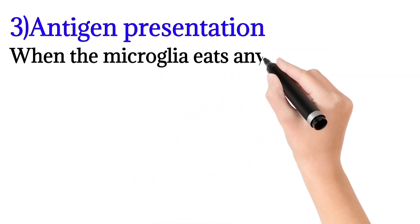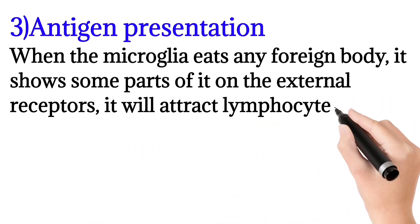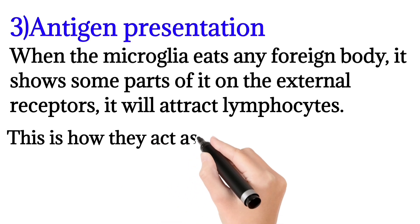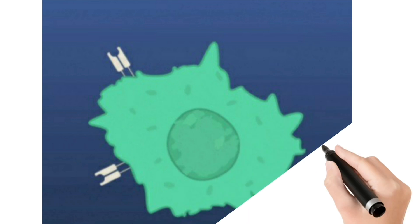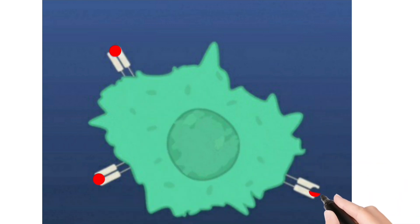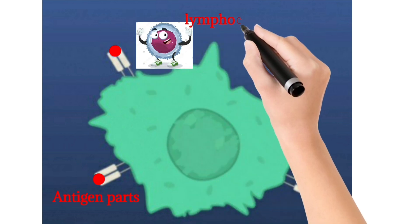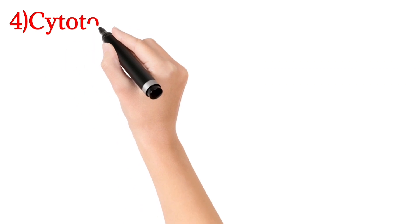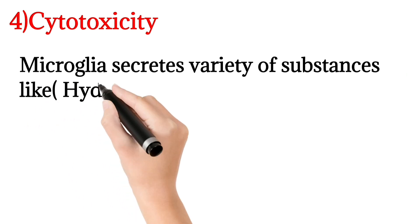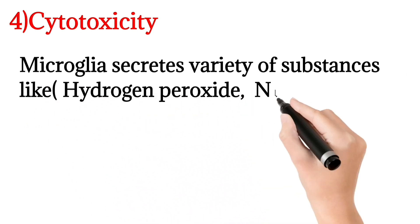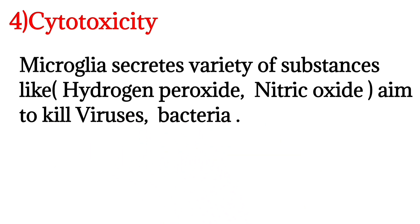The next function is antigen presentation. When microglia encounter a foreign body, they present part of it on their surface receptors, which attracts lymphocytes. The next function is cytotoxicity, in which microglia secrete toxic substances to destroy pathogens.